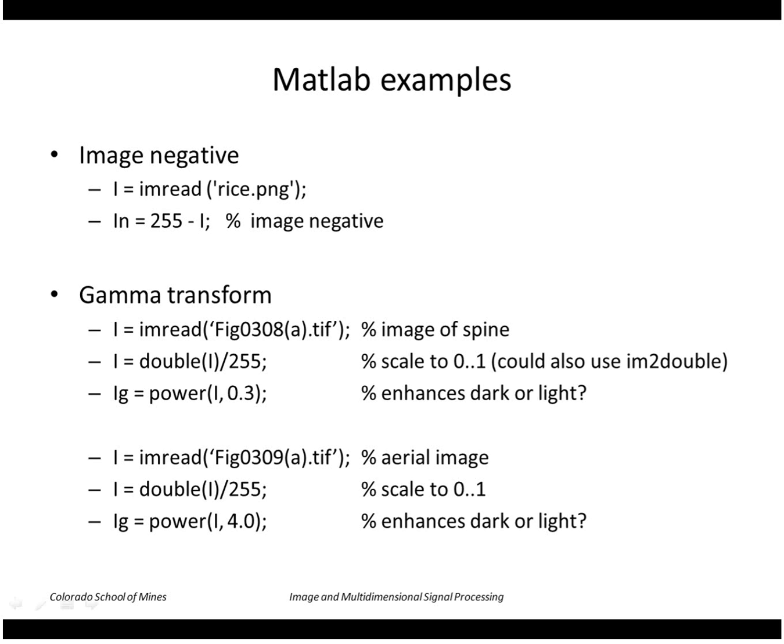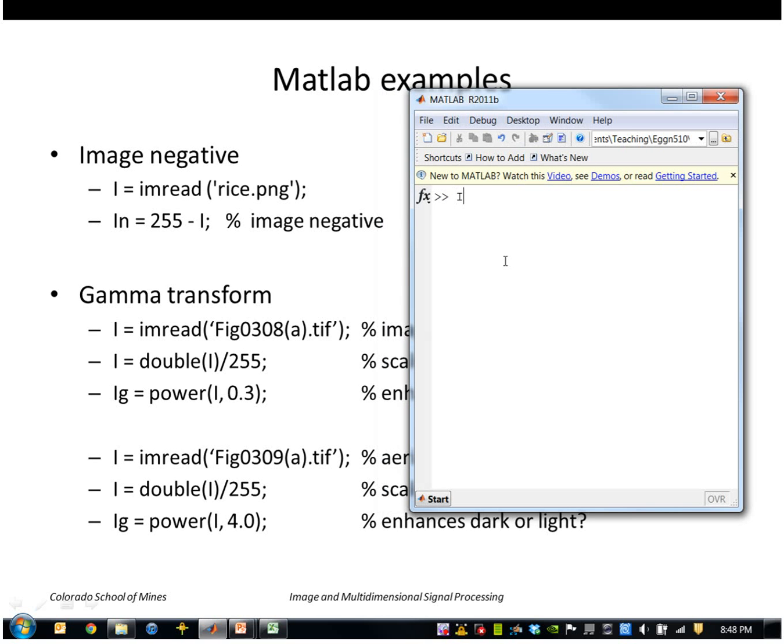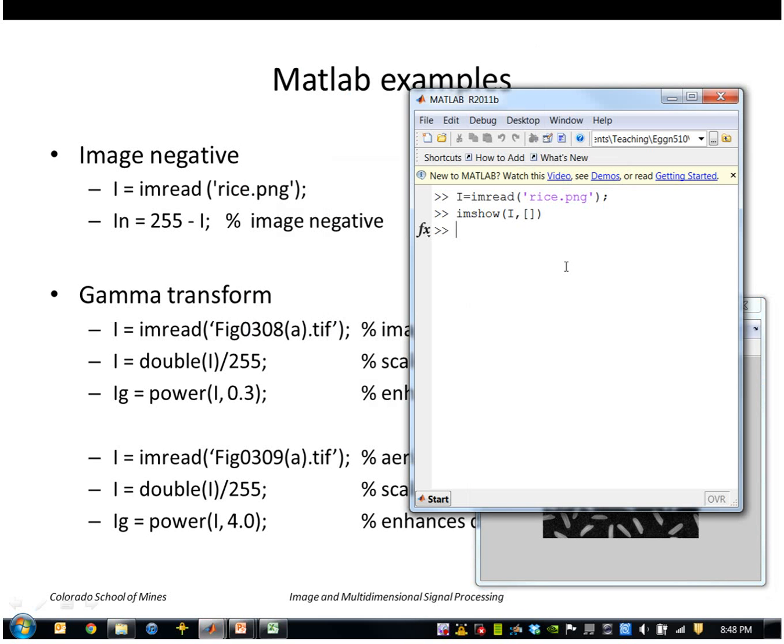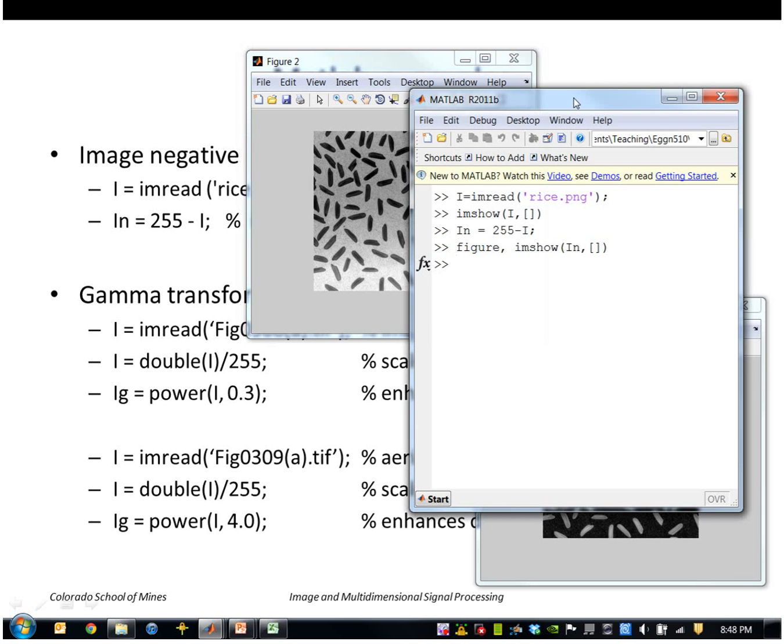An example: let me just pull up some MATLAB images here. A simple one would be image negation. Here is my input image, and my output image, my negated image, would simply be 255 minus that. That would be an intensity transform that would have a negative slope, for example.